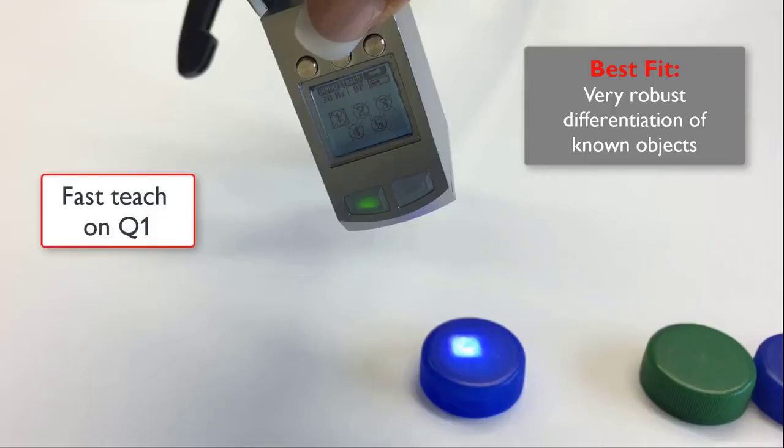Here's an example. We'll check the color of different bottle caps. Here we'll quick teach the blue one by pressing and holding teach for more than three seconds. Then we'll tap next.